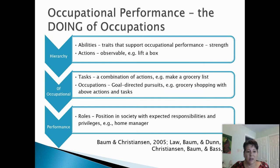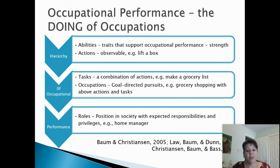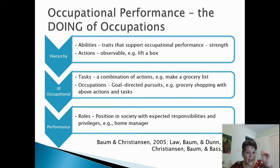Another aspect of the PEOP model is that we have a hierarchy of occupational performance — a lot like the nested concepts we spoke about with previous models. In PEOP, we call it the doing of occupations within this hierarchy. At the earlier level we have abilities and actions. Abilities are the traits that people have that they may or may not be using at a particular time — for example, a person's strength. As I'm sitting here creating this video, I'm not necessarily using my strength, but I have that inherent capacity. Actions are things we carry out with that strength — for example, we might lift a box.